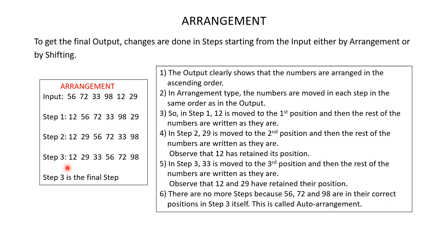In the arrangement type, the numbers are moved in the same order as in the output. In the output 12 is the first number, so in step 1, 12 is the first number rearranged. The next number in the output is 29, so in step 2, 29 is rearranged. Next is 33 in the output, so in step 3, 33 is rearranged. The numbers are moved in each step in the same order as is given in the output.